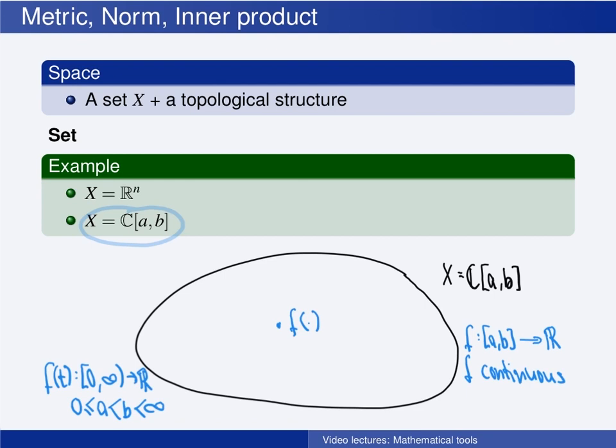So, these are examples of the sets we are interested in. But, which topological structures may these sets have in order to make out a space?